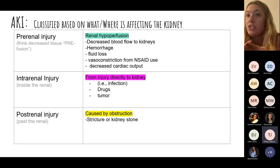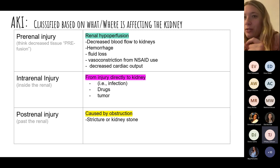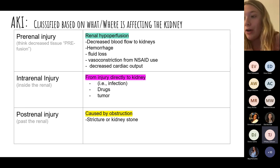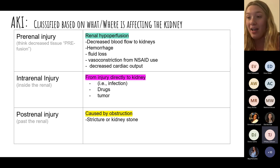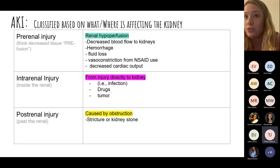With pre-renal injury, massive fluid loss, massive hemorrhage, decreased cardiac output, or a patient going into shock puts them at risk for AKI. Intra-renal injury means direct damage inside the kidney — blunt force trauma, nephrotoxic drugs — physically damaging the kidney. Post-renal injury relates to urinary tract obstruction: an upper obstruction causes urine to back up into the kidney, damaging it.